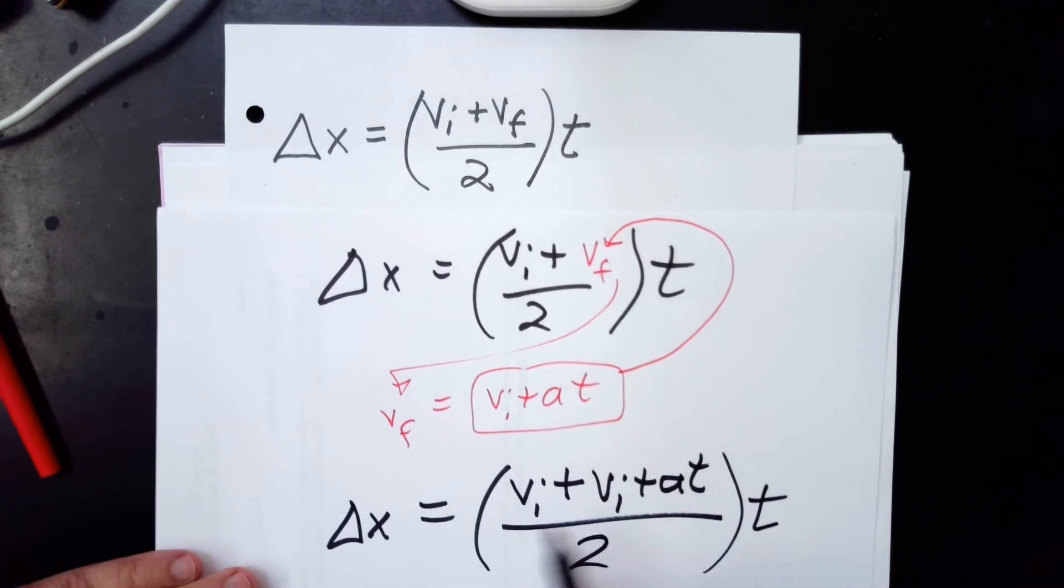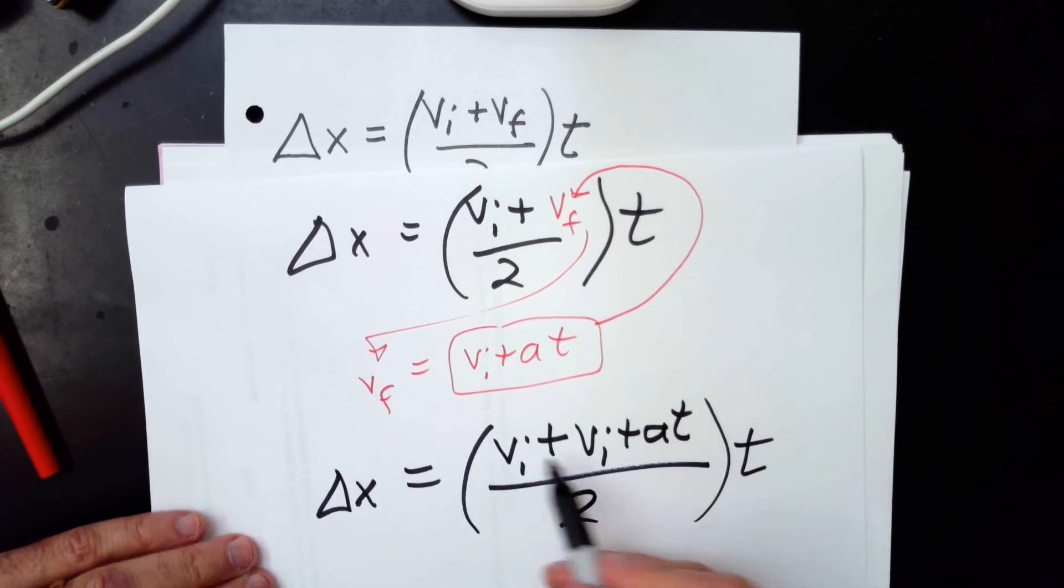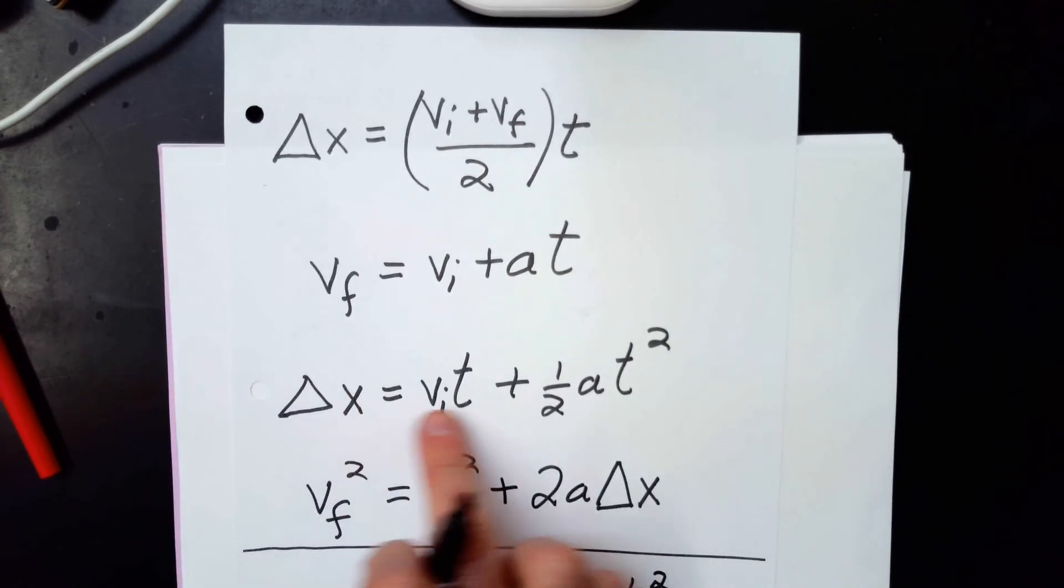Okay, now you rearrange, combine, like that's vi plus vi makes 2vi. Simplify t, multiply t through it, and you will get the third equation. You will get this.